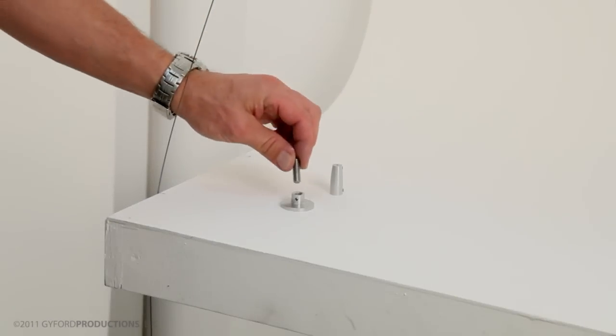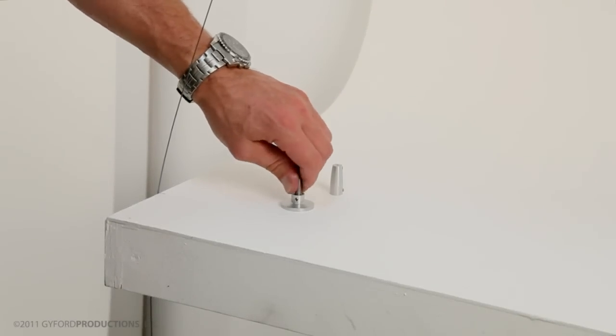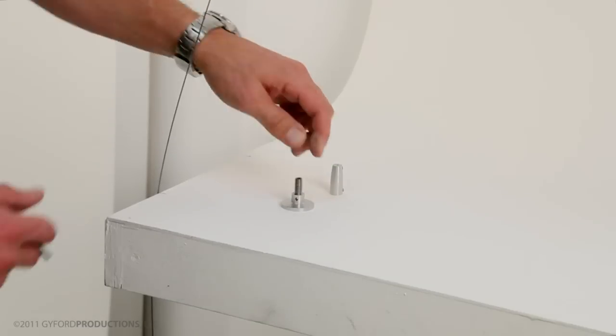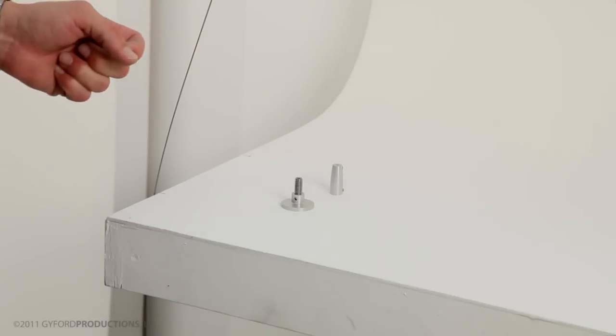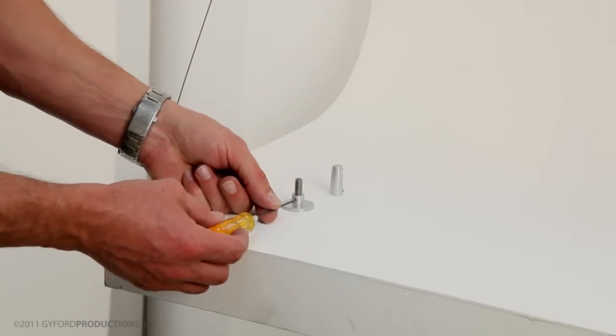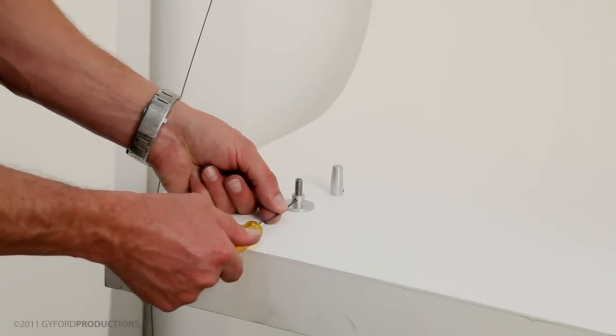We'll thread in the supplied 7/8ths, 5/16ths, 18 set screw. And then set the small set screw at the base, which will prevent that screw from backing out on you when you're trying to work the turnbuckle.